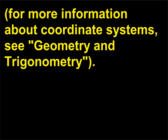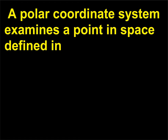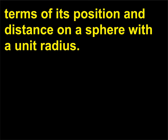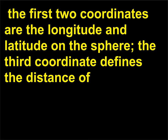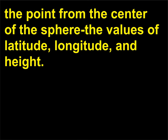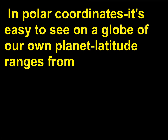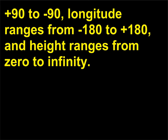A polar coordinate system examines a point in space defined in terms of its position and distance on a sphere with a unit radius. The center of the sphere is considered the origin. The first two coordinates are the longitude and latitude on the sphere; the third coordinate defines the distance of the point from the center of the sphere. The values of latitude, longitude, and height in polar coordinates: on a globe of our own planet, latitude ranges from +90 to -90, longitude ranges from -180 to +180, and height ranges from 0 to infinity.